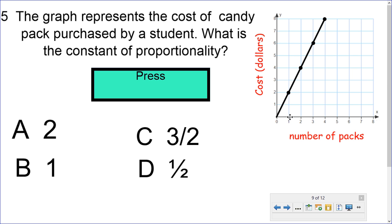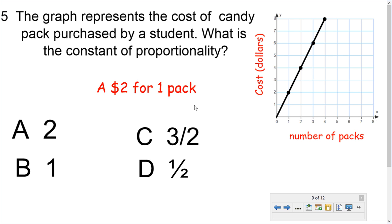So for one pack, it'll cost $2. For two packs, it'll cost $4. For three packs, it'll cost $6. And four packs, it'll cost $8. So I'm interested in the unit rate. Remember, the unit rate is the price of one pack of this candy. So one pack costs $2. So my answer for the constant of proportionality is going to be A, $2 for one pack.